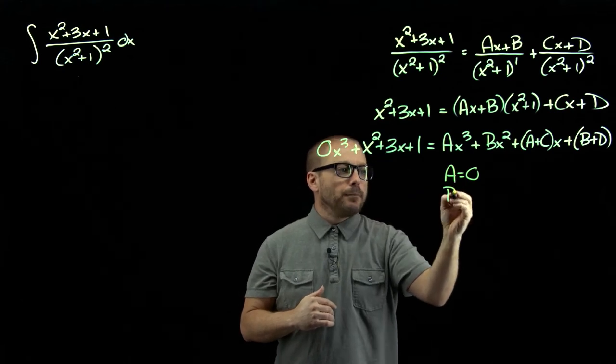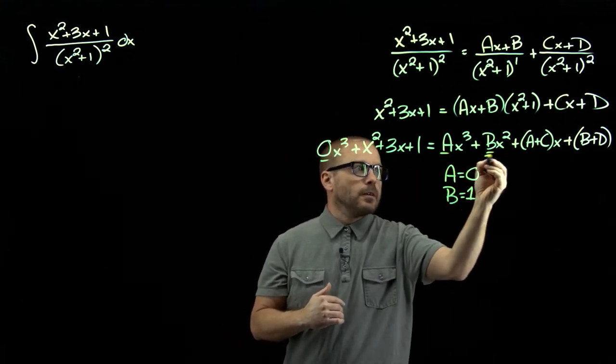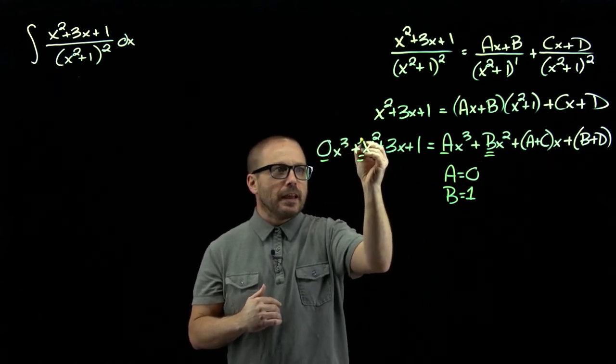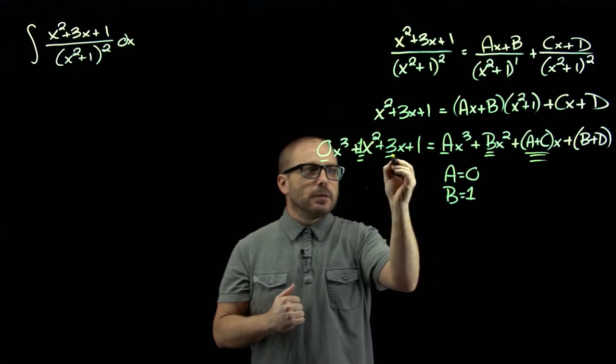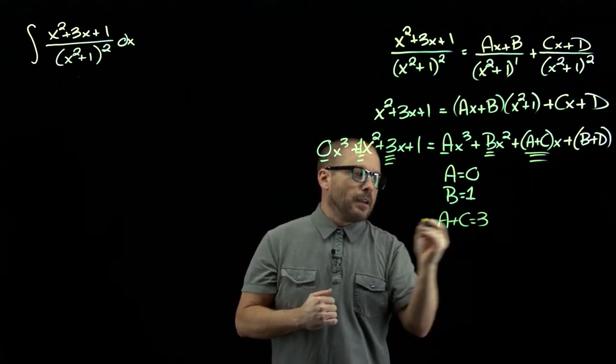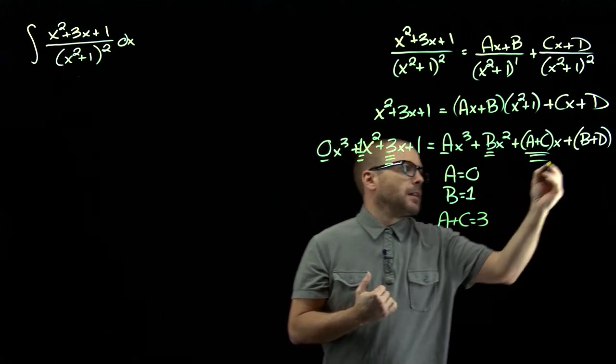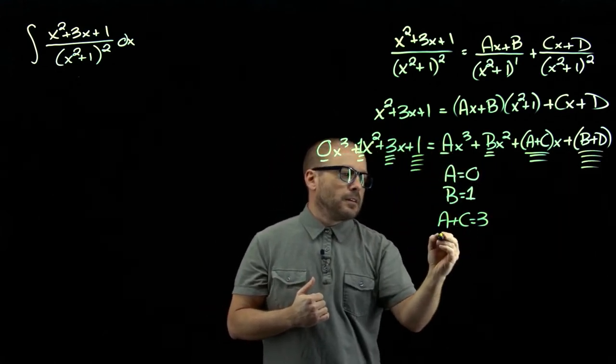B should be one. A should be zero, b should be, think of that coefficient as one. A plus c should be three. And lastly, b plus d should be one.